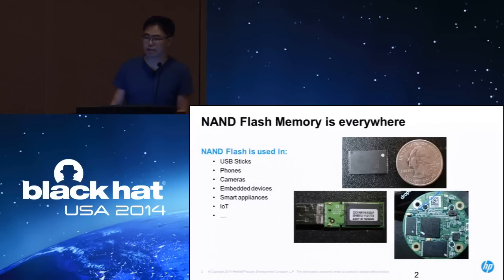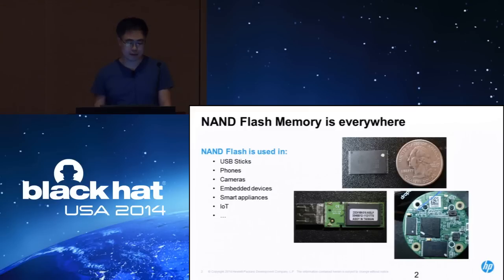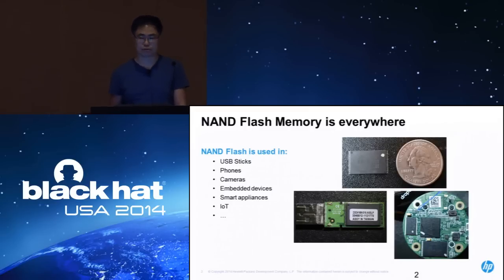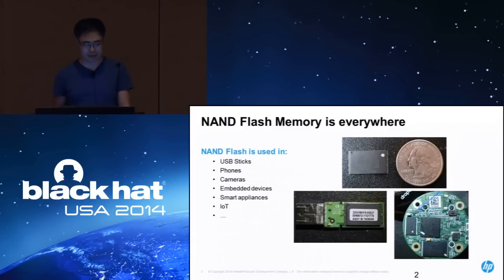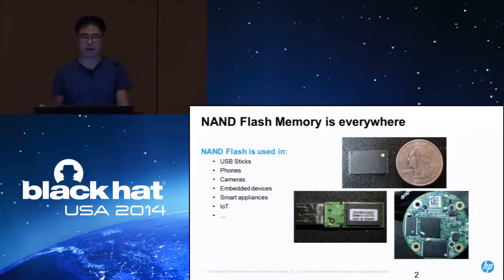Flash memories are used everywhere these days. For example, the USB sticks you have are probably using flash memories. The flash memory is really small — smaller than a quarter. All embedded devices, something like Dropcam, smart appliances, cameras, and phones are using some form of NAND flash memories.